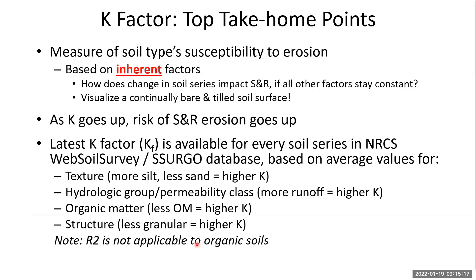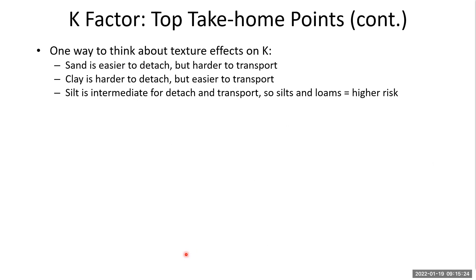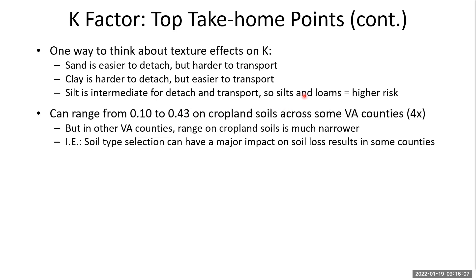You don't need to know all the details — you just need to understand that soils differ in their susceptibility to erosion. One way to think about texture effects on K: sand is relatively easy to detach but harder to transport. Clay is harder to detach but easier to transport. Silt is intermediate — relatively easy to both detach and transport. Silts and loams tend to be more erodible.